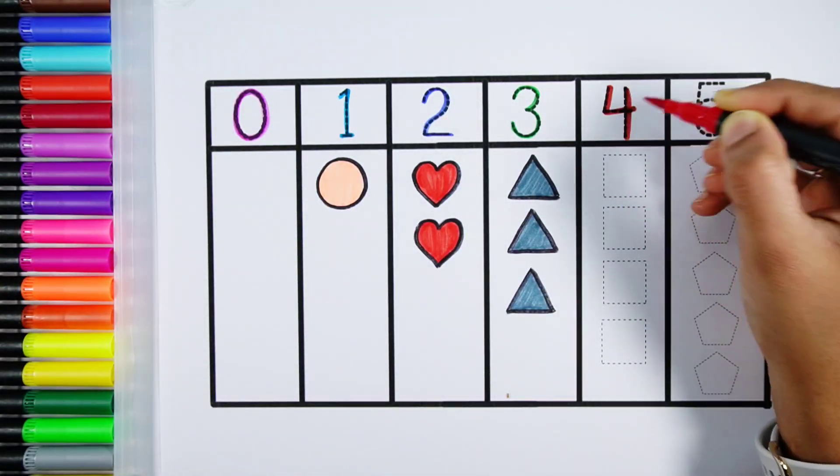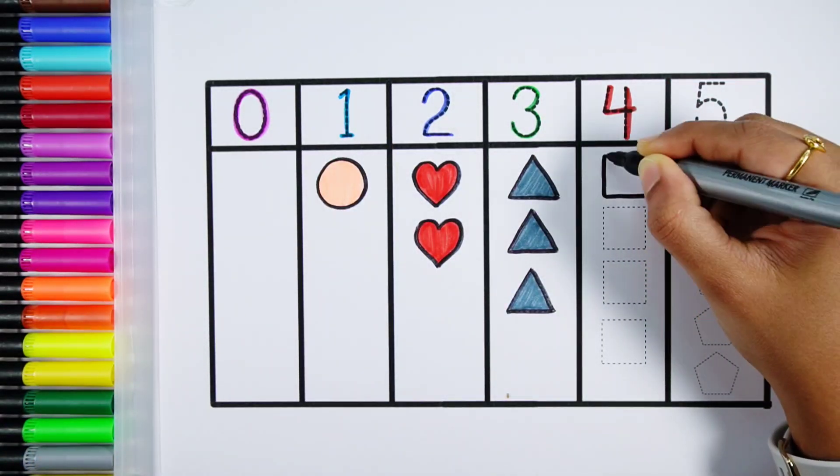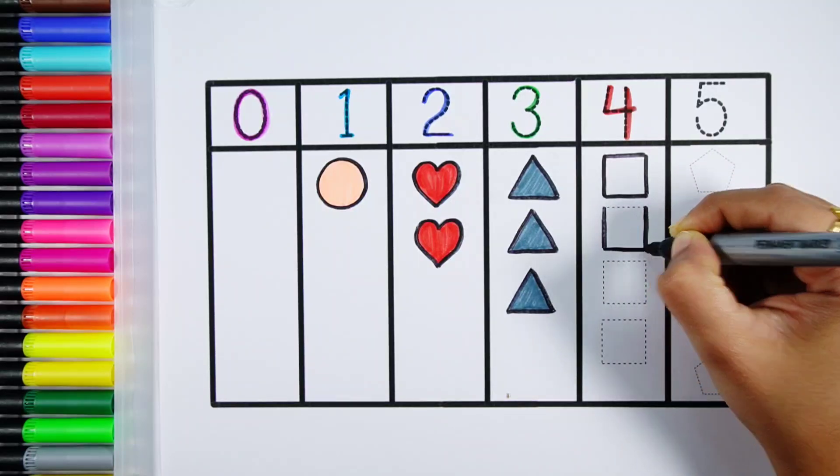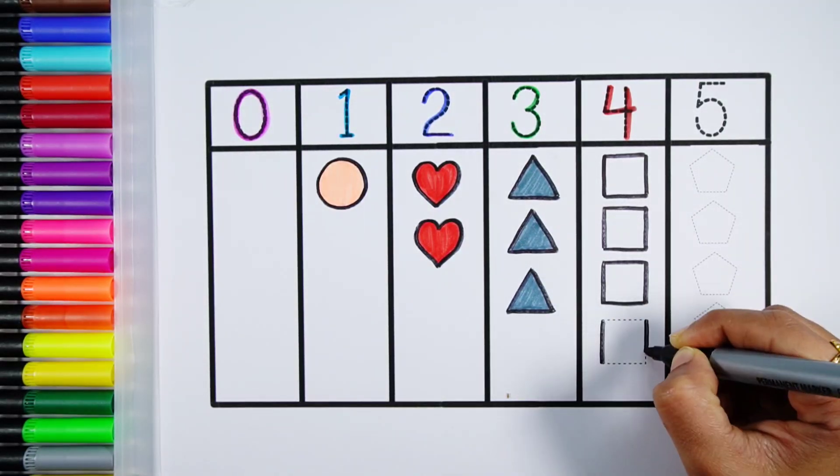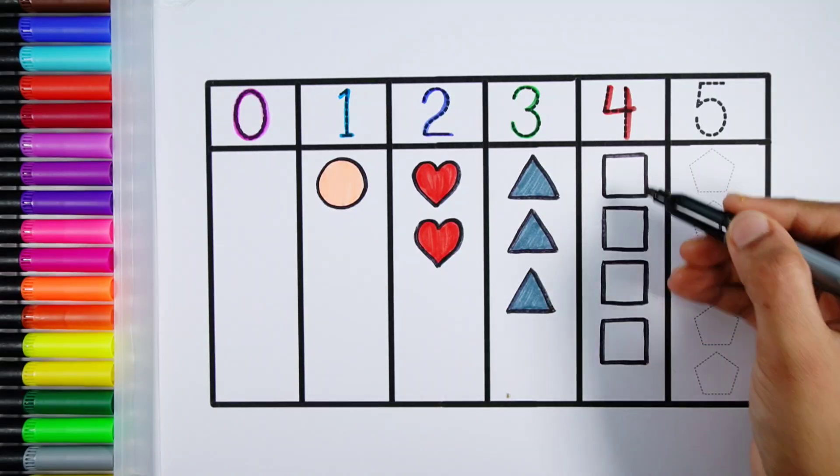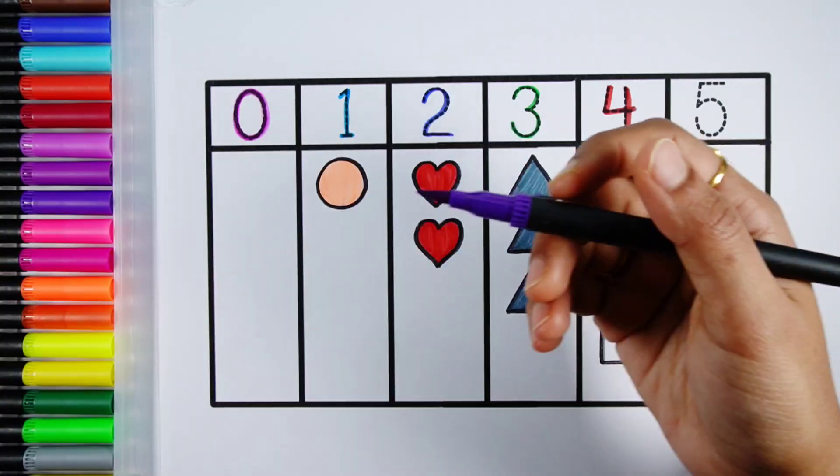Number four. One, two, three, four, four squares. White color.